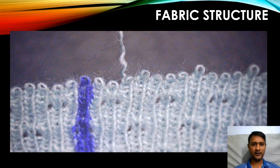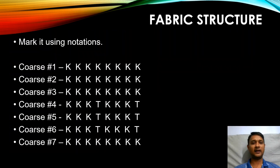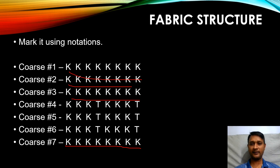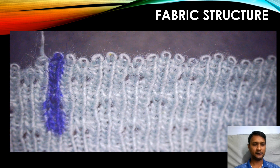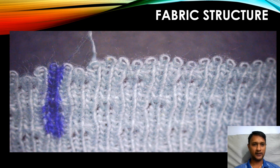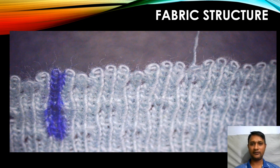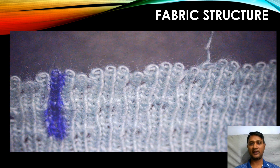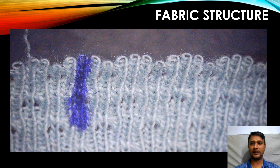After that vertical line, we can see the complete loop is getting unraveled from each and every needle. So we can declare course number seven as all knit — knit knit knit knit knit knit knit — just like course numbers one, two, and three. Let's move on to course number eight. After that vertical line: knit knit knit knit knit knit — there is no half moon or backend float of loops in this course. Course numbers seven and eight are both all-knit courses. Let's unravel course number nine.